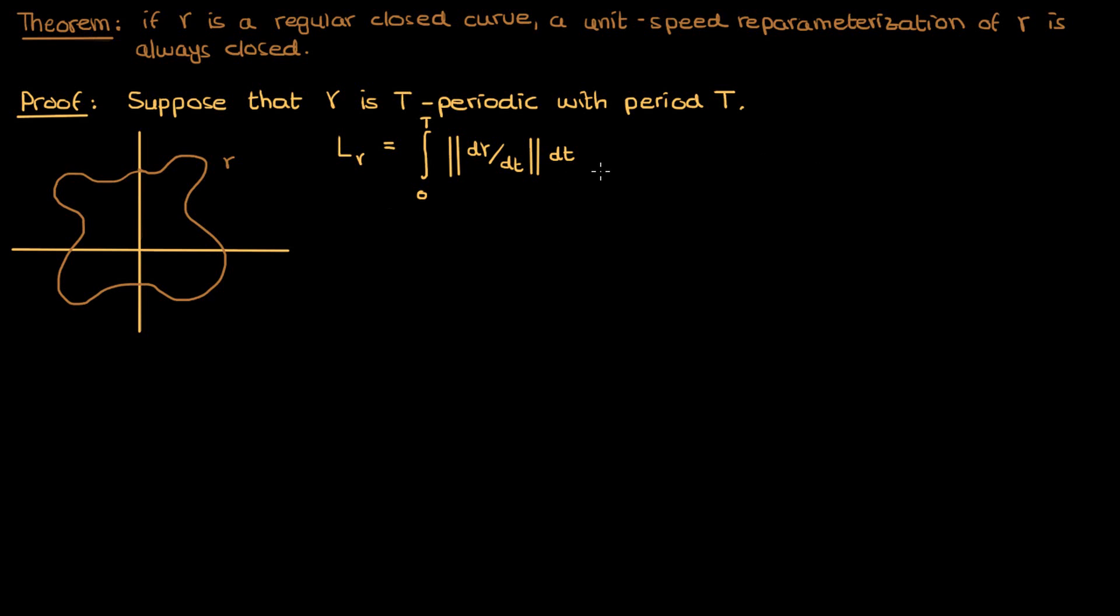In addition, by definition of arc length, the arc length we cover when we go from t equals 0 to some generic value t plus the period capital T is given by this following integral. We can then split this integral up into an integral going to T plus an integral going further to t plus T. As mentioned above, this first integral is just the length of the curve L_gamma.